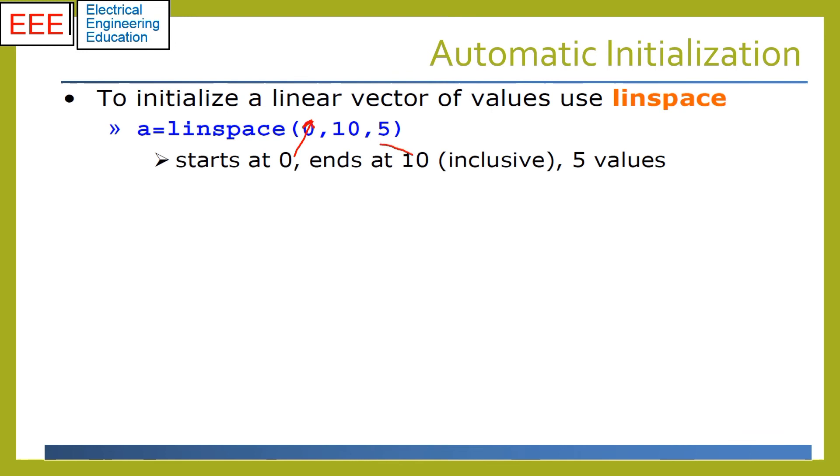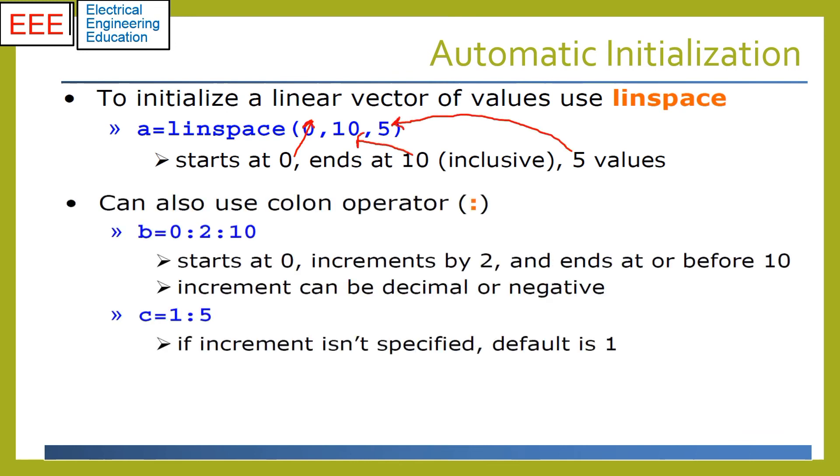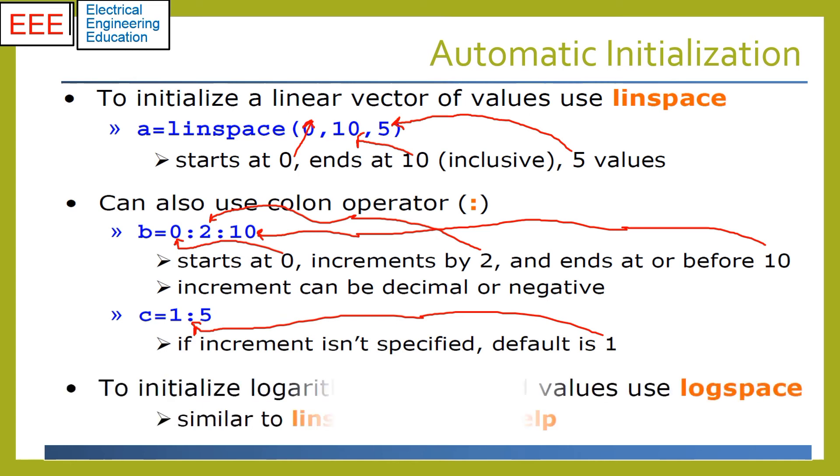In the former, the input parameters include the start point, end point, and the number of total points or elements. In the colon operator, an increment is explicitly provided. The default increment is 1. For example, the array C without increment defined is an array with elements 1 to 5. Similar to linspace, one can use logspace for logarithmic initialization.